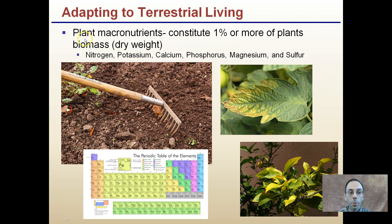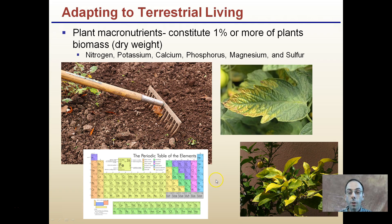Adapting to the terrestrial environment starts with plant macronutrients — the big nutrients that plants are mostly composed of. They constitute 1% or more of a plant's biomass, which is their dry weight. These are things you might be familiar with seeing on fertilizers, such as nitrogen, potassium, calcium, phosphorus, magnesium, and sulfur. Plants need these nutrients to avoid yellowing; for example, the yellowing shown here is a potassium deficiency. You want to make sure your soil is fertile and has the proper nutrients to support plant growth.